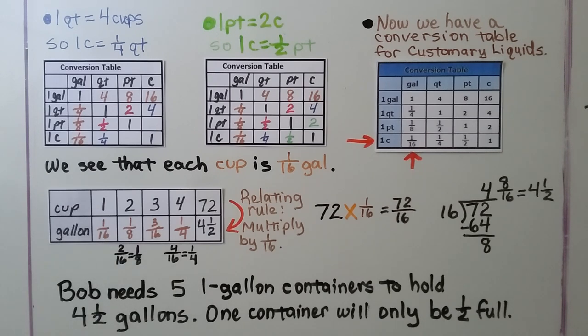That means Bob is going to need five one-gallon containers to hold four and a half gallons. He only had one-gallon containers, so one container will only be half full.